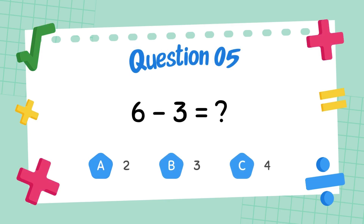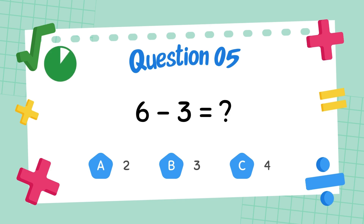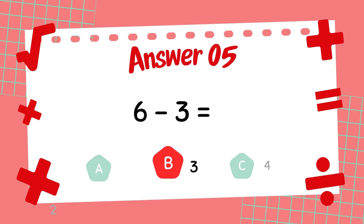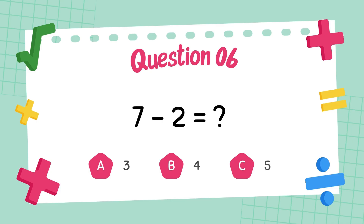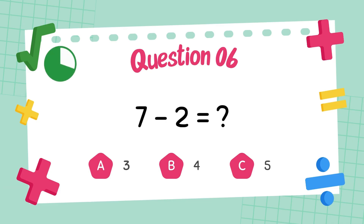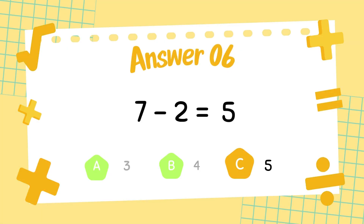What is 6 minus 3? The answer is 3. What is 7 minus 2? The answer is 5.